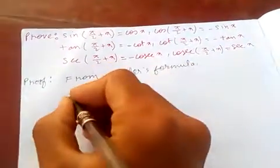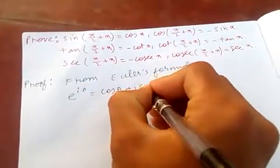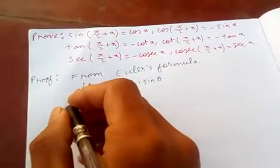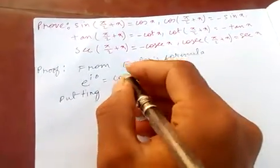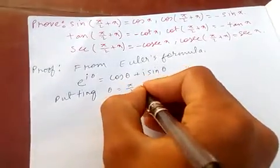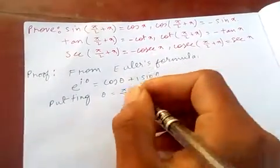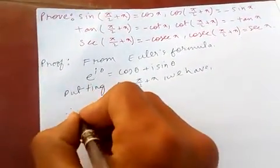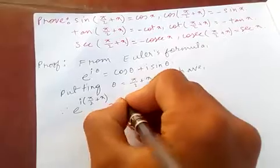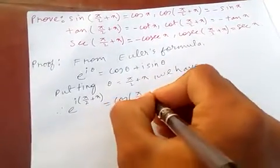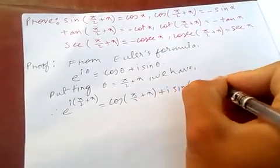From Euler's formula, e^(iθ) = cos(θ) + i·sin(θ). Putting θ = π/2 + x, we have e^(i(π/2 + x)) = cos(π/2 + x) + i·sin(π/2 + x).